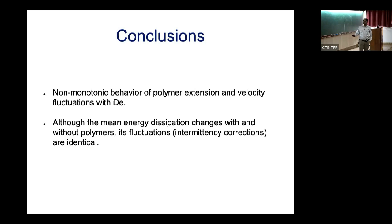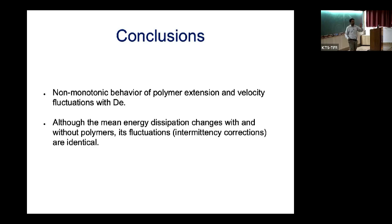In conclusion: large is indeed different. Pushing the parameters leads to remarkable findings. For bubbly flows, a non-monotonic behavior of polymer extension was found—to the best of our knowledge, not previously observed. And similar to experiments, although the mean energy dissipation changes with or without polymer (meaning the exponent value differs), the intermittency correction to the exponent seems to be identical. Thank you.